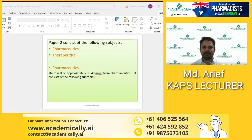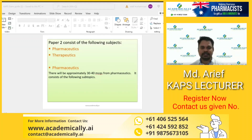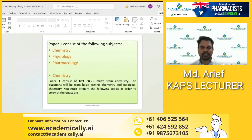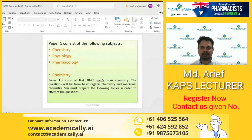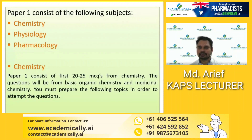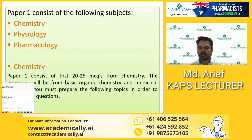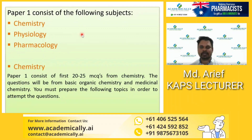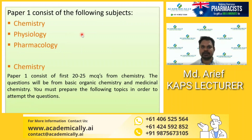As you have seen in Paper 1, there are two main components: chemistry and physiology and pharmacology. In order to pass Paper 1, the overall score should be 50 — that is, you need to score 50 correct MCQs.